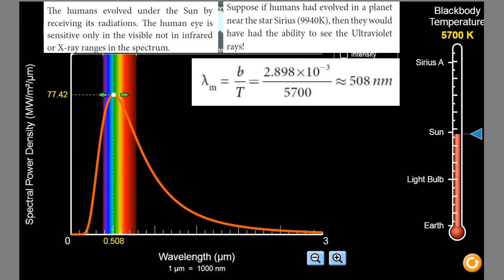So, the humans, they evolved under the sun by receiving its radiations. Here we are surviving for several billions of years. So, humans evolved under the sun by receiving its radiation. Therefore, human eye is sensitive only in the visible region, not in the IR region or in the x-ray range of the spectrum.